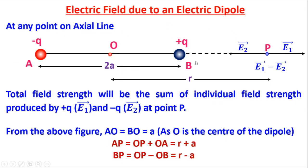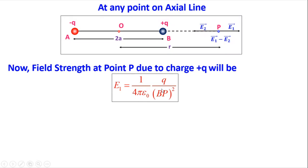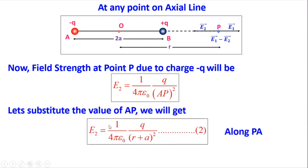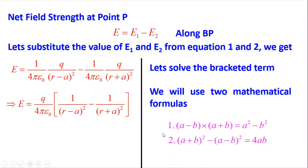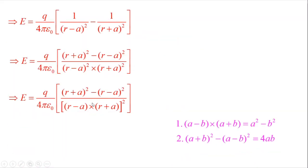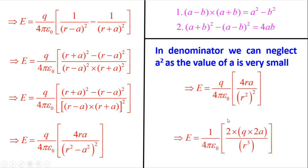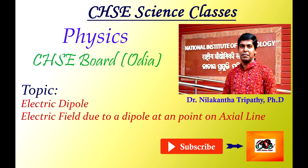Quick revision: first we calculated the distances AP = r + a and BP = r − a using simple mathematics. Then we calculated E1 due to plus q as (1/4πε₀) × q/(r − a)², and E2 due to minus q as (1/4πε₀) × q/(r + a)². Setting E = E1 − E2 and substituting values with the mathematical formulas gives the final result.